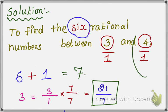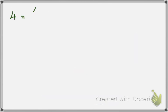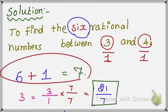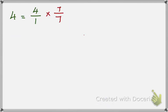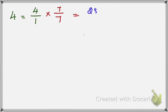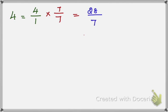Now consider the next number 4. So 4 equals 4 by 1. Again multiply 7 in numerator and denominator — 7 by 7. Multiply the numerators: 4 times 7 equals 28, and 1 times 7 equals 7. So you get another form of the number: 28 by 7.